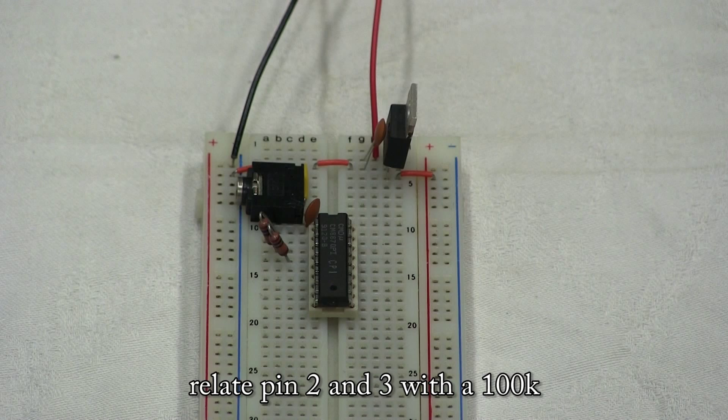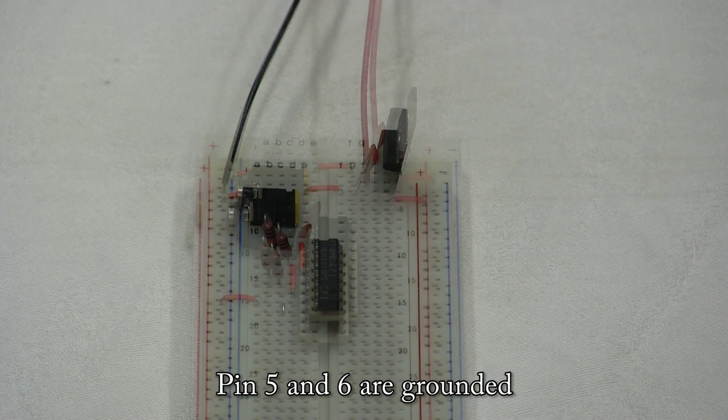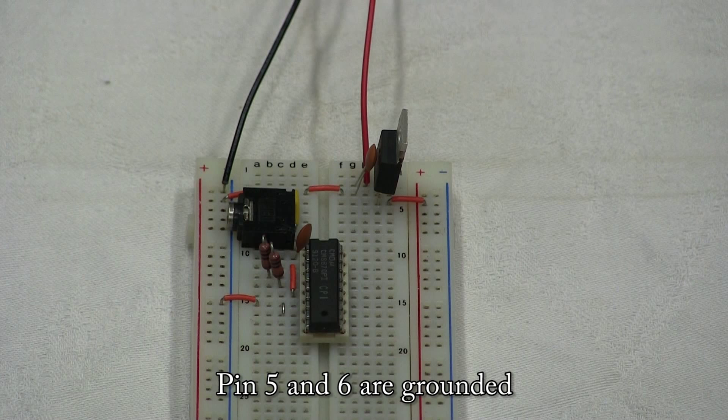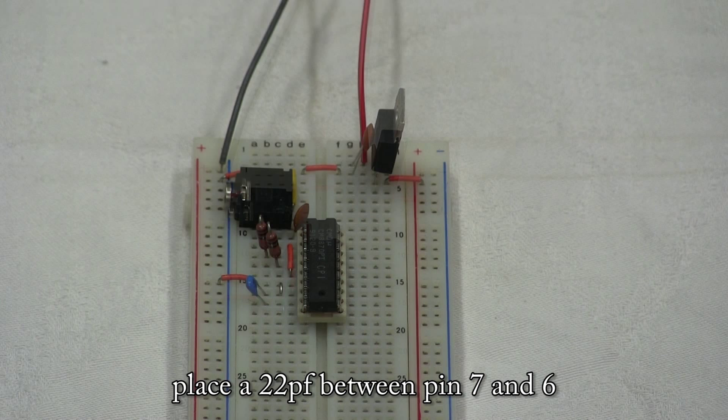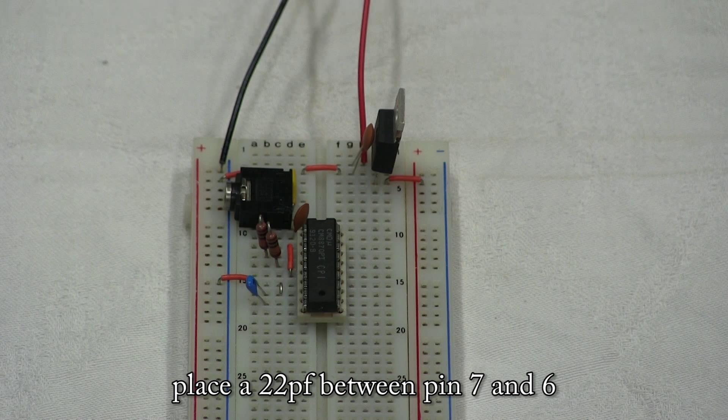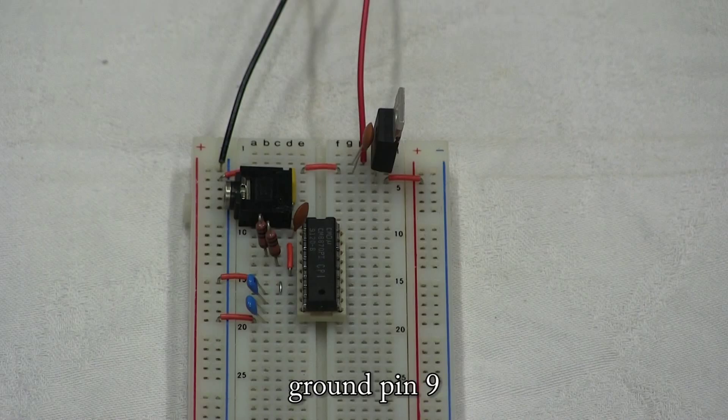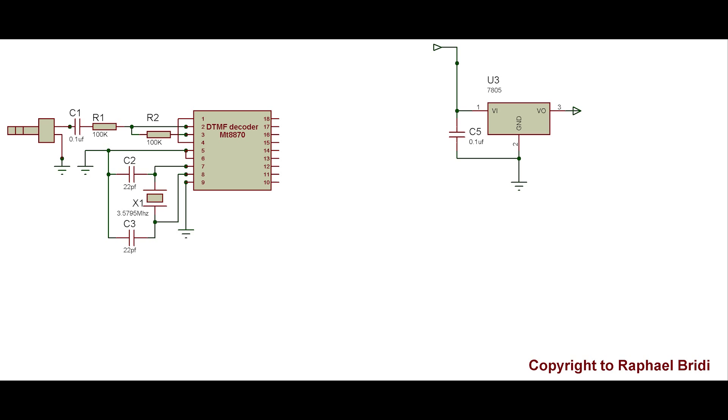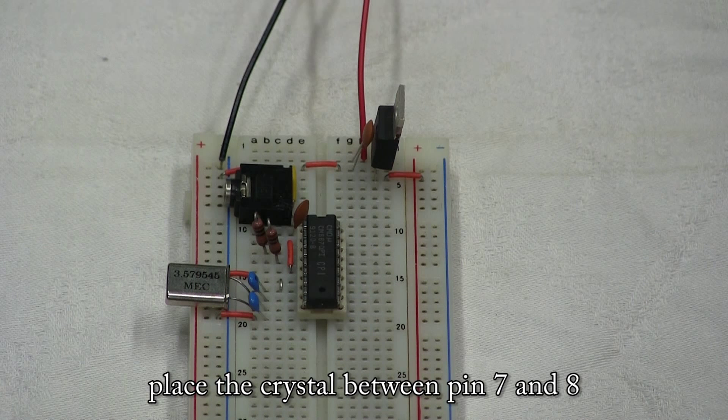Relate pin 2 and 3 with a 100k. Connect pin 1 and 4 together. Pin 5 and 6 are grounded. Place a 22pF between pin 7 and 6, and a 22pF between pin 8 and 9. Ground pin 9.